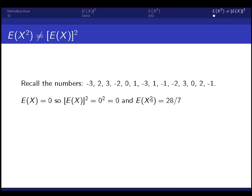So with these numbers, we found that the expected value of x was 0, so we squared it and got 0.